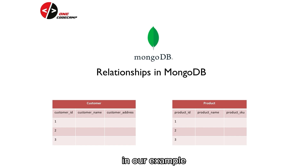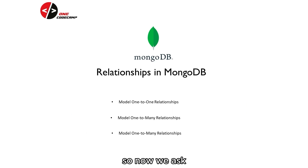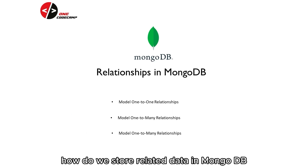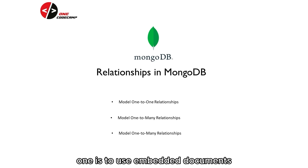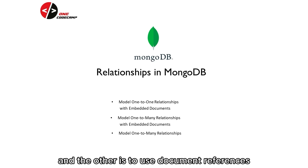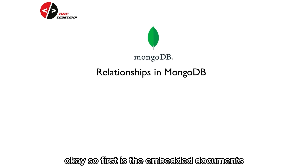In our example, we have one-to-one and one-to-many relationships. So we ask: how do we store related data in MongoDB? We have two ways to specify a relation. One is to use Embedded Documents, and the other is to use Document References.